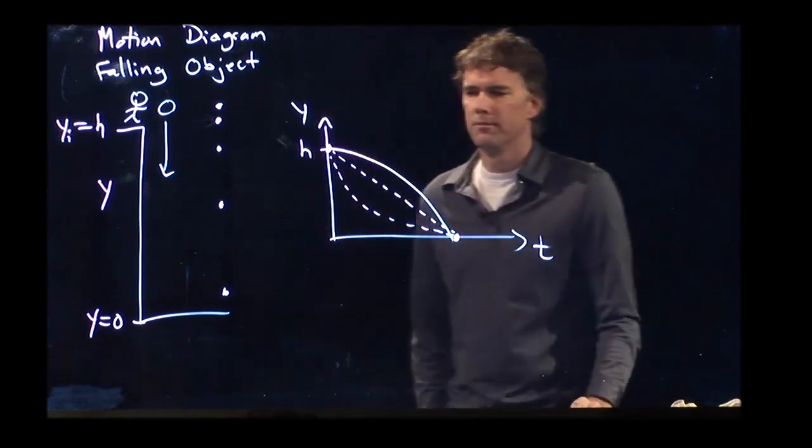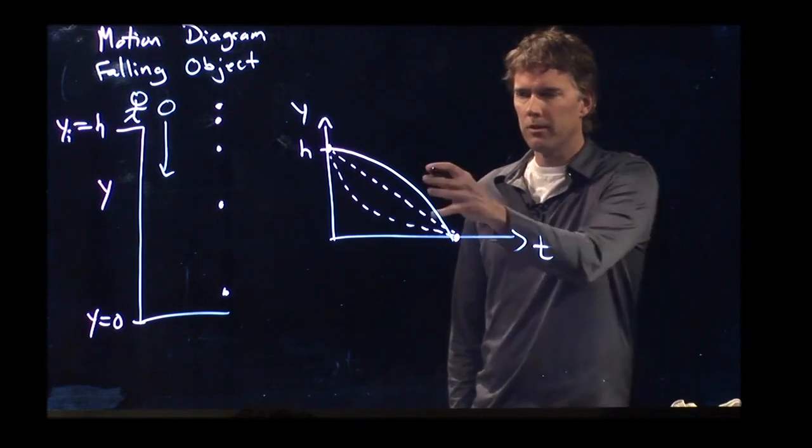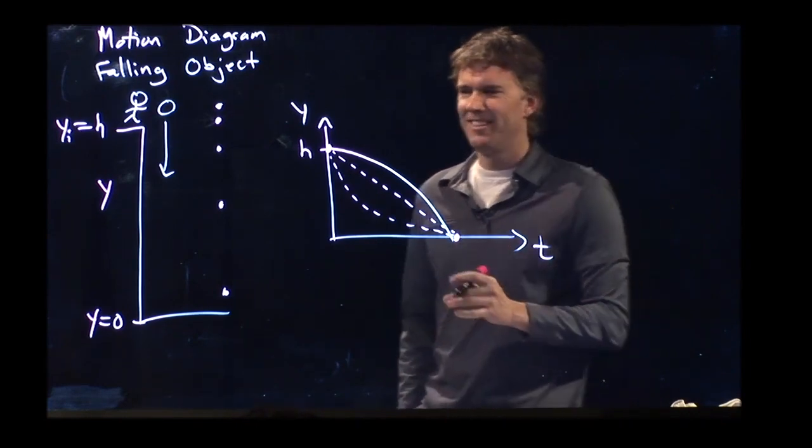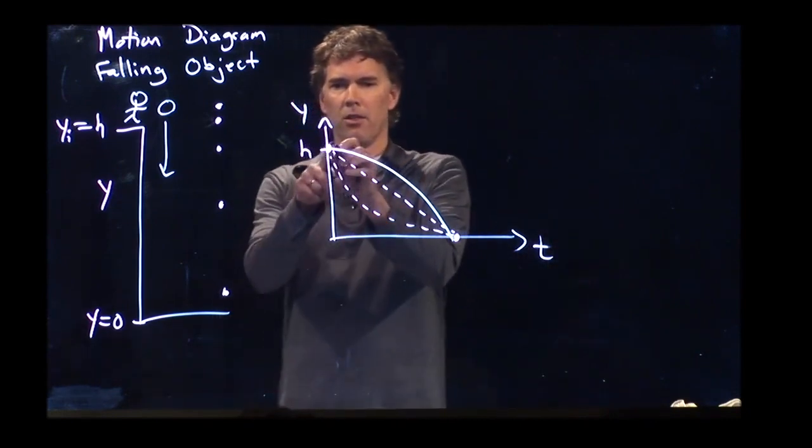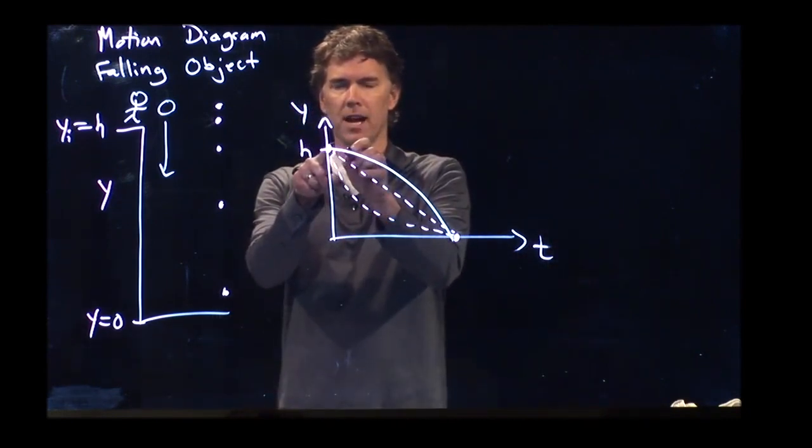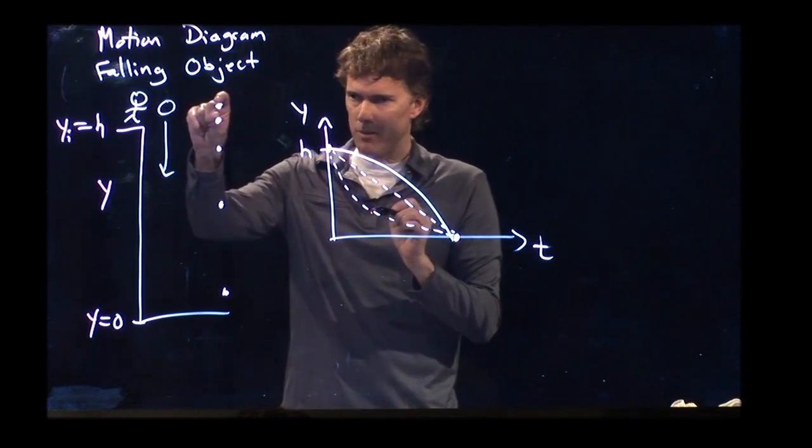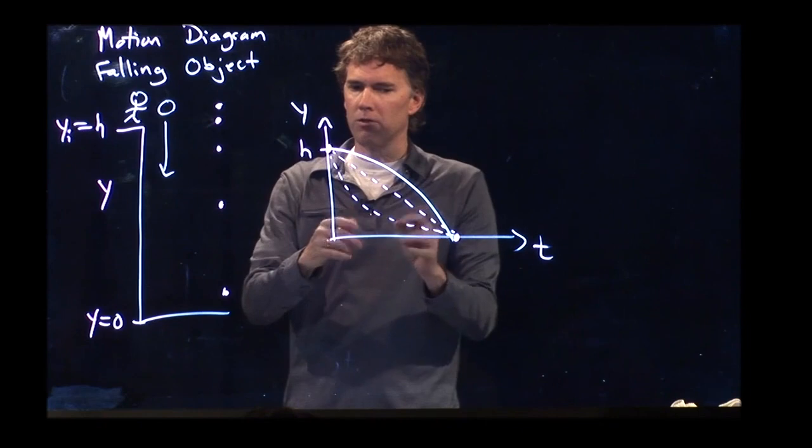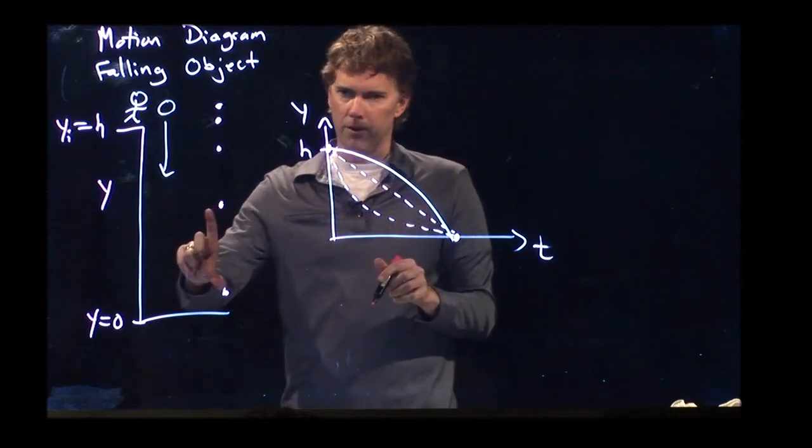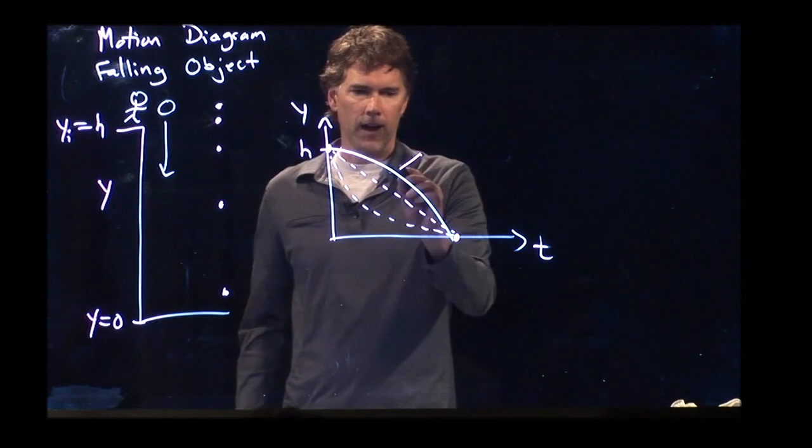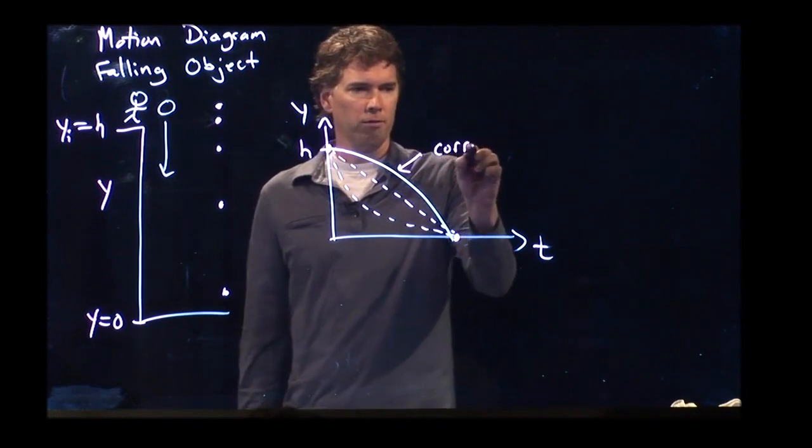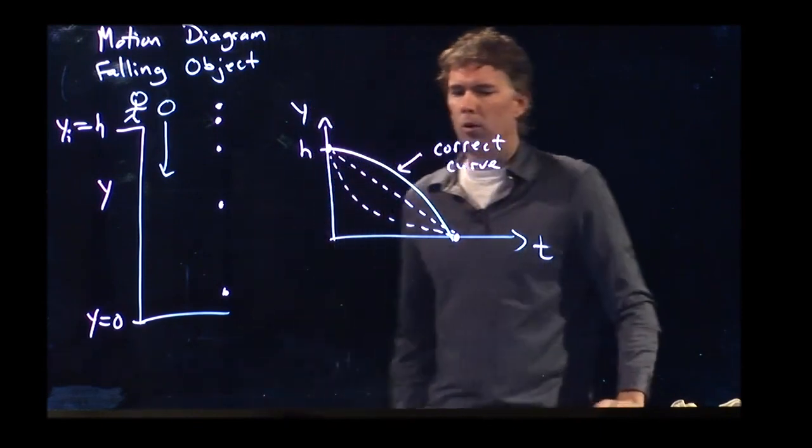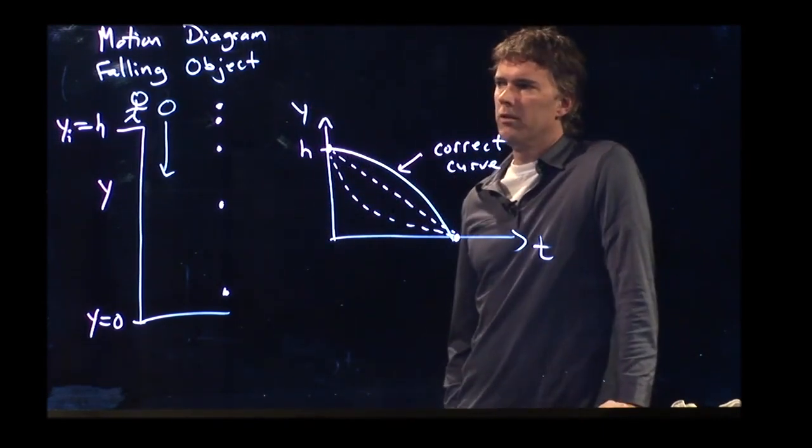Is it just because I drew a solid line that you all said yes on that last one? This is the correct one, right? The y position as a function of time initially doesn't change very much. They're very close together. As time goes on, those get further and further apart. Okay. So this is, in fact, the correct curve for y, the position of the object, as a function of time.